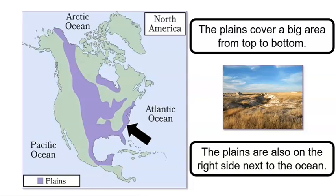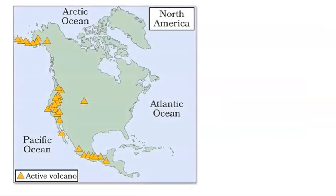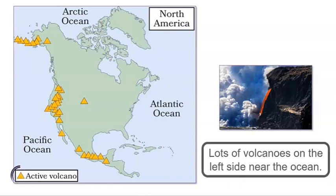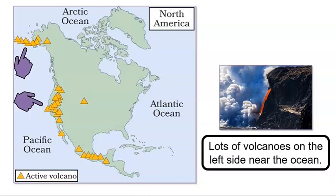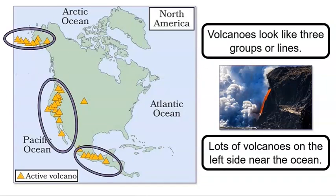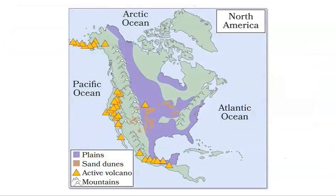The next map shows the final landform we will explore today. This map is a map of active volcanoes. Each volcano is marked by a little triangle. I noticed that there are a lot of volcanoes on the left side of North America near the Pacific Ocean. The volcanoes also look like they are in three groups or lines. I remember that we noticed mountains also form lines. Now look at this map — it shows all the landforms we looked at today on one map.